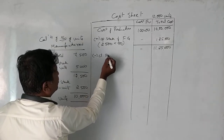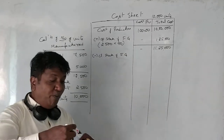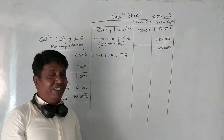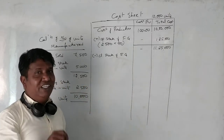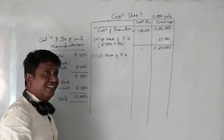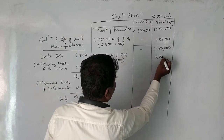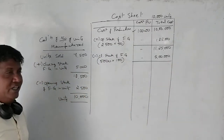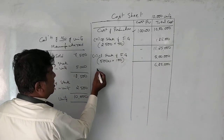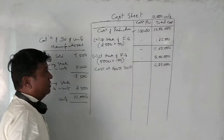Now we minus closing stock of finished goods. Closing stock is 5,000 units. For opening stock, per unit cost is 50 rupees, but for closing stock, per unit cost is not given. When closing stock per unit is not given, the base is cost of production per unit — which is 100 rupees. So 5,000 units × 100 rupees = 5 lakh rupees. This gives us cost of goods sold as 6,25,000 rupees.